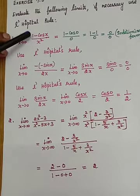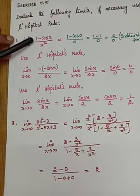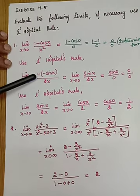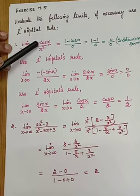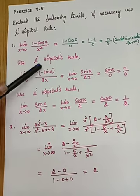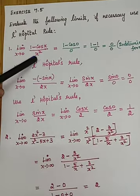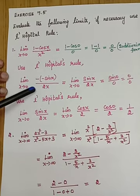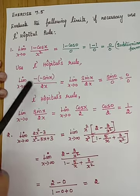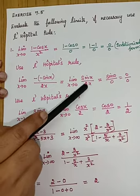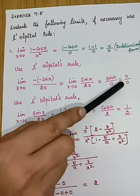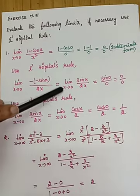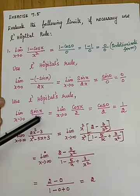Differentiate the numerator separately: the differentiation of 1 is 0, and the differentiation of −cos x is sin x. Differentiate the denominator x² to get 2x. Now apply the limit as x→0: sin(0)/(2×0) = 0/0. We get the indeterminate form again, so we apply L'Hôpital's rule a second time to limit x→0 of sin x / 2x.